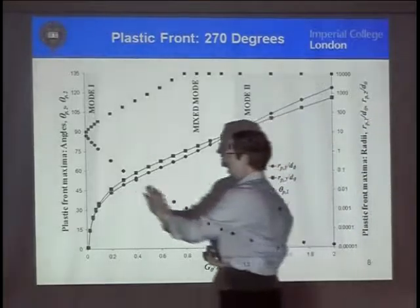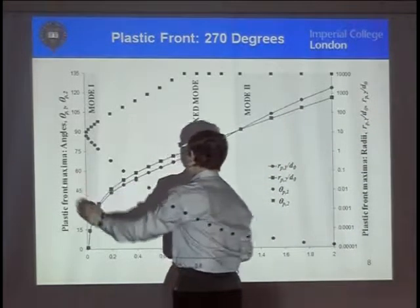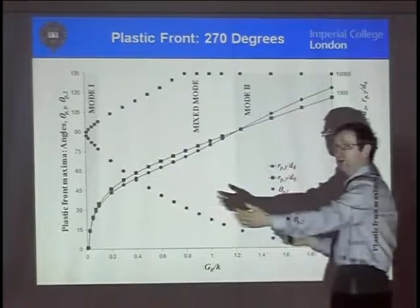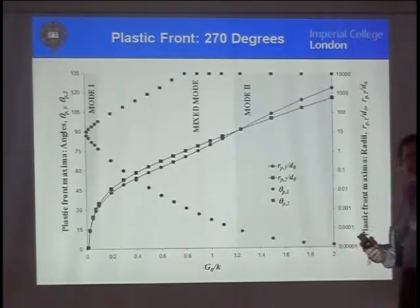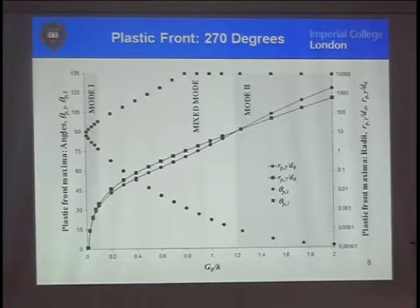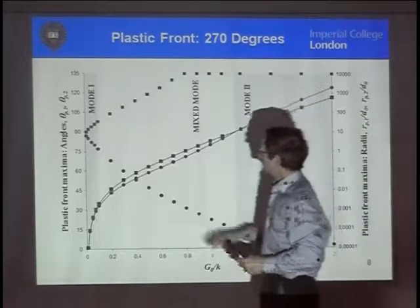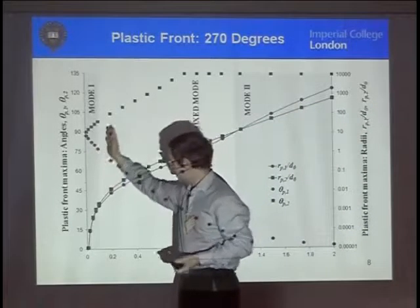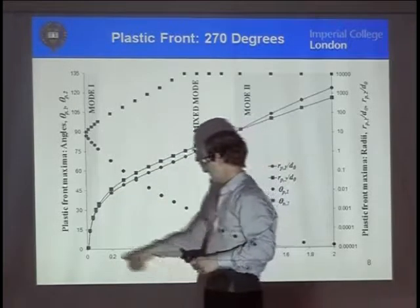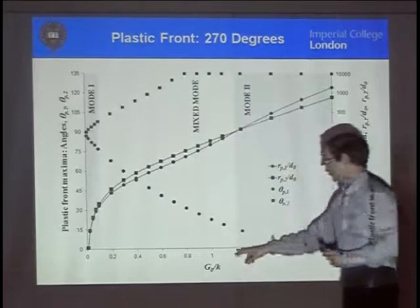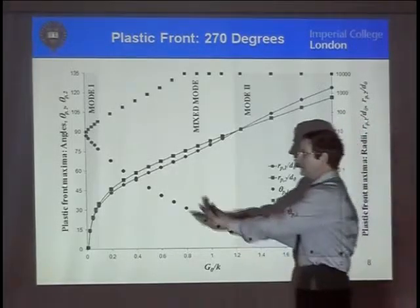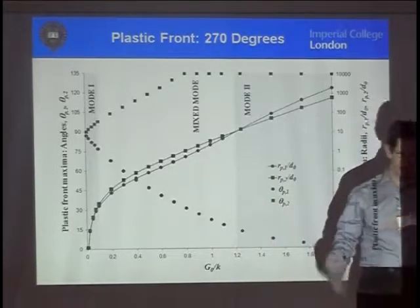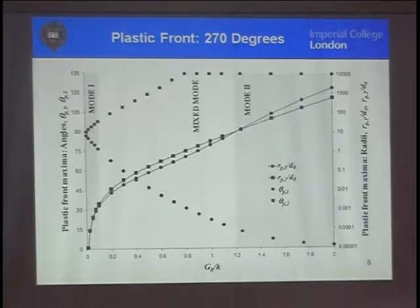And this line here is the size of the length of the plastic zone, read on this scale, divided by this number, D₀. So, when we're well over here, it's mode 1, when we're in the middle, it's mixed mode, and if we can get far enough over here, it might even be mode 2. And I've arbitrarily set an estimate of when it's mode 1, to be when G₀ over K is 0.1, and over here, when it's bigger than 1.2, it's going to be on mode 2. If it's in the middle, then you can expect some strength, which is actually some links of the two.